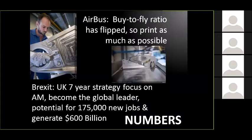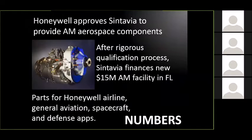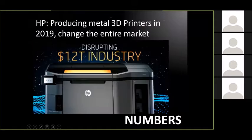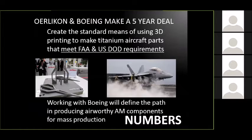The data is out there and the numbers talk. Honeywell teamed up to put $15 million down on a plant in Florida to produce more additive aerospace parts. BMW is putting 3D printed metal parts into the new i8 Roadster as part of actual car production, not prototypes. HP's announcement on entering the market in 2019 is disrupting a $12 trillion industry. A company dropped $55 million on a plant in North Carolina but is still searching for a workforce to run the machines — so we're seeing the skills gap associated with this as well.